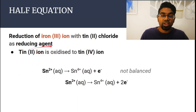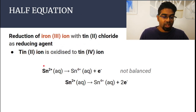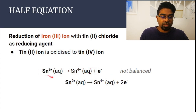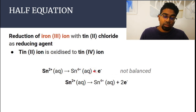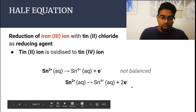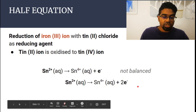Let's look at tin-2 chloride as a reducing agent. Tin-2 ion will be oxidized to tin-4 ion — both in the aqueous form. This is straightforward; the number of atoms are balanced. The charge is not balanced: on the left we have plus 2, on the right we have plus 4. In order to make plus 4 become plus 2, we need two electrons. So plus 4 minus 2 gives plus 2 on the right, which equals the left. Now the number of atoms and the charge are balanced, so we have our half equation for Sn²⁺ to Sn⁴⁺.